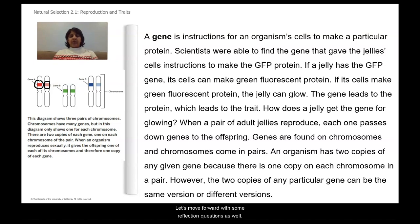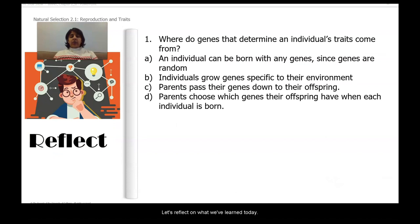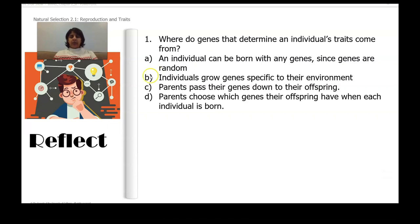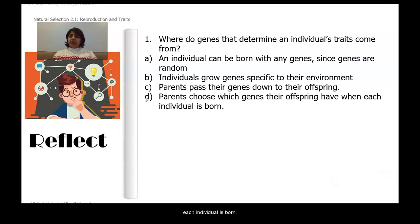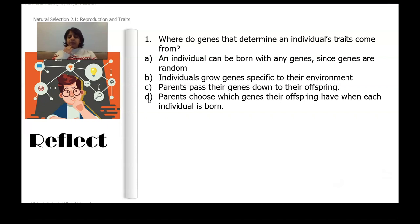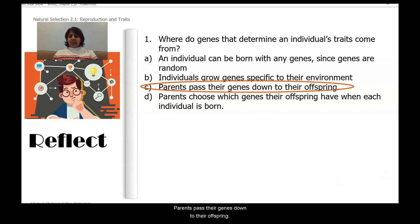Let's reflect on what we've learned today. First question: where do genes that determine an individual's traits come from? A — an individual can be born with any genes since genes are random. B — individuals grow genes specific to their environment. C — parents pass their genes down to their offspring. Or D — parents choose which genes their offspring have. Pause the video and respond. That's right, it's C: parents pass their genes down to their offspring.